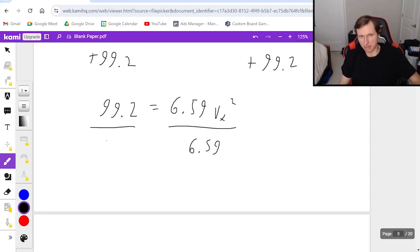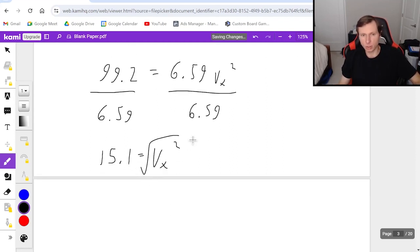So 6.59. And I get 15.1 equals v_x squared. And then I just have to take the square root of both sides. So v_x is going to be the square root of 15.1 is 3.88.